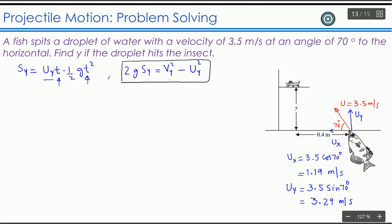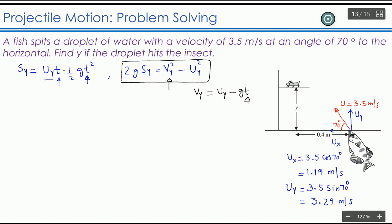If we choose the second equation, we need vy, and to find vy we would need time anyway. That means we would have to find time first, then find vy, and then find sy — which requires an extra step. So we won't use that equation. We'll continue with sy = uy·t − ½g·t². The key question now is: how do we find t?